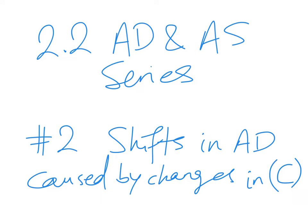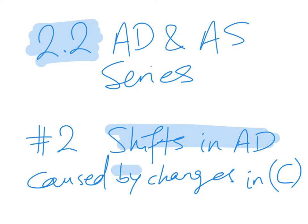This is video number 2 of the Aggregate Demand and Aggregate Supply series. This series corresponds to Unit 2.2 of the IB Economics syllabus, and this is video number 2 where I'll talk about shifts in the aggregate demand that are caused by changes in consumption spending. The next three videos will talk about the shifts in aggregate demand caused by the other components of aggregate demand.